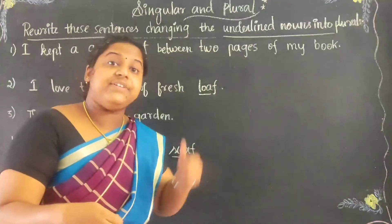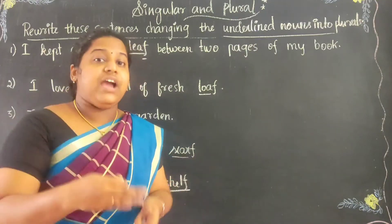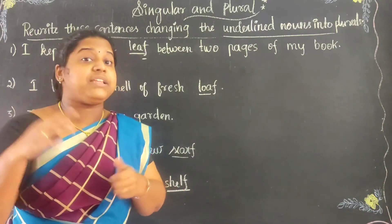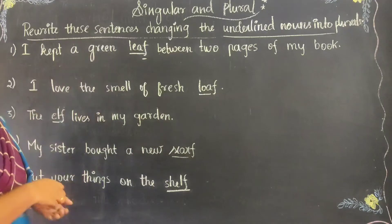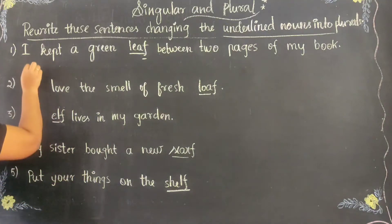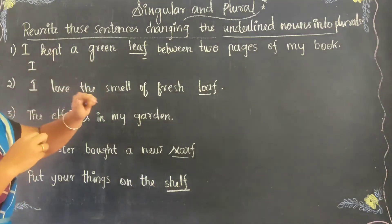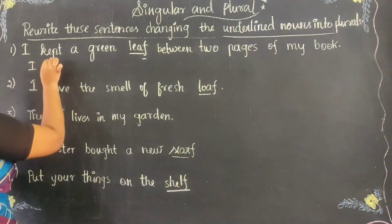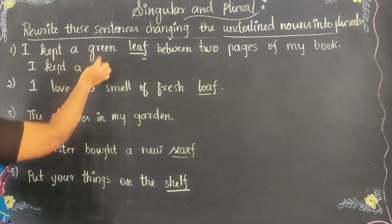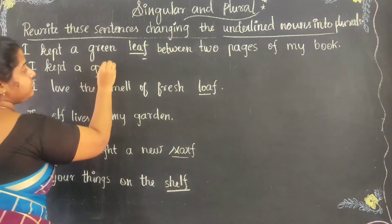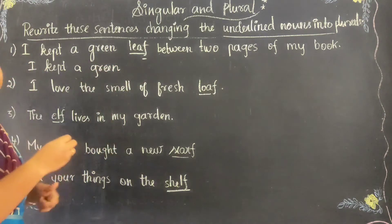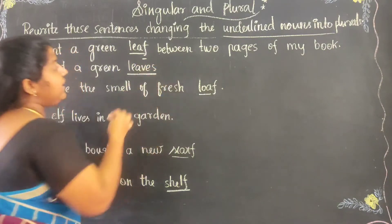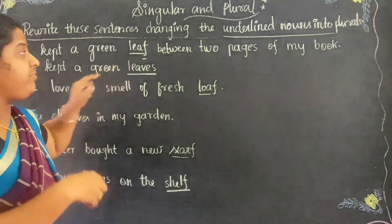If the singular word ends with F or F-E, we have to drop that F or F-E from the singular word and then we are going to add V-E-S to make the plural form. So leaf changes into leaves. Leaf here is singular and leaves here is plural.